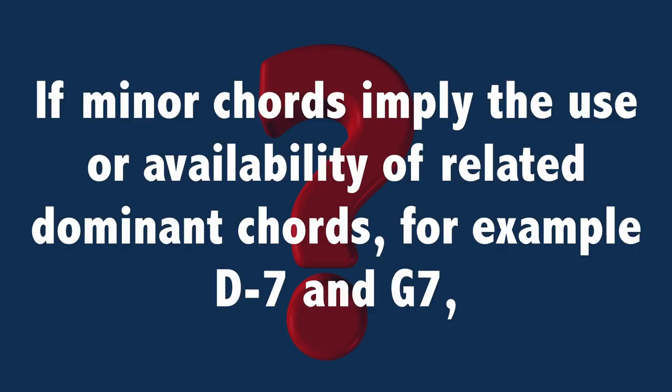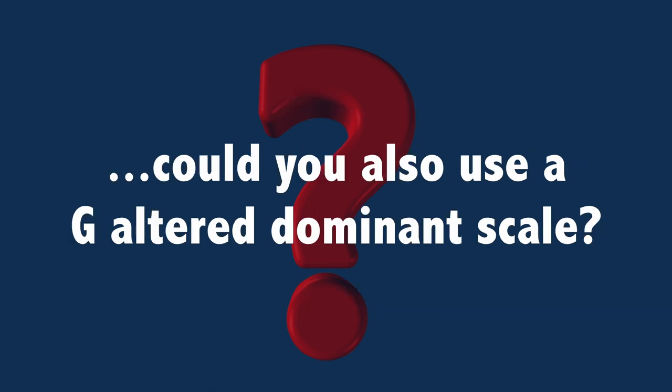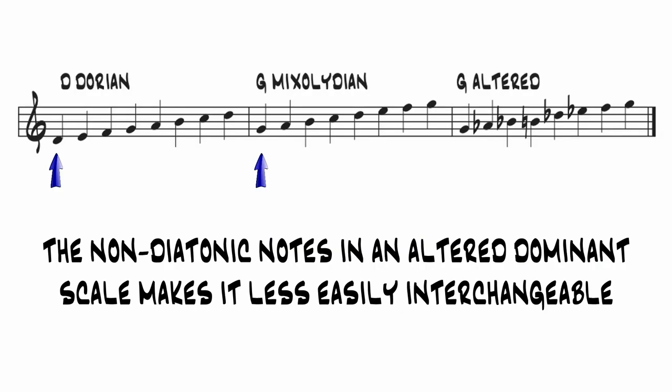If minor chords imply the use of related dominant chords — for example D minor 7 and G7 — could you also use a G altered dominant scale? While D Dorian and G Mixolydian contain the same notes, making them somewhat interchangeable, the G altered dominant scales introduce new and non-diatonic notes into the mix, so they won't be as easily interchangeable in the same way. More to the point, altering a dominant chord increases the sense of resolution, which might set up an unrealized expectation in the ear of the listener.